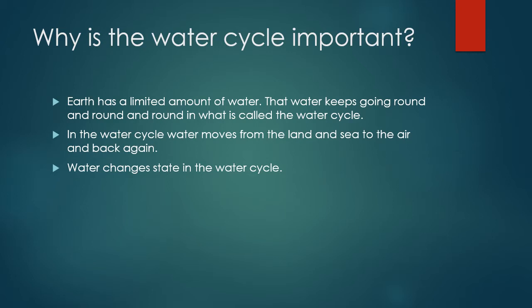Condensation means that a gas is now changing into a liquid. If the temperature in the clouds is too cold, the water will freeze and change to hailstones or into snow. When those clouds become too heavy, it starts to rain or snow or hail. Those hailstones and snow eventually start to melt because of the sun's heat and flow back into the rivers, lakes and seas. Thereafter, the whole process starts again.